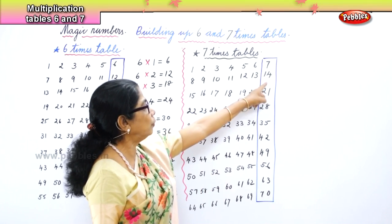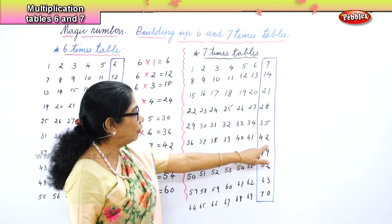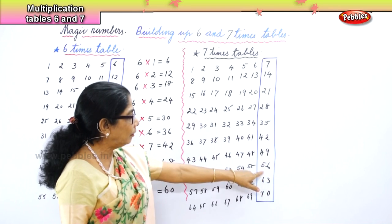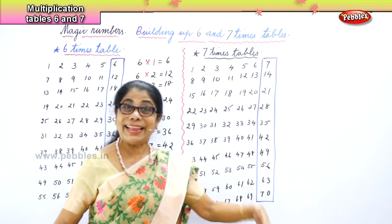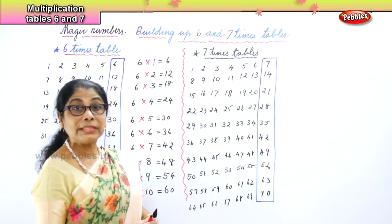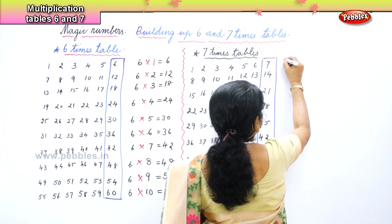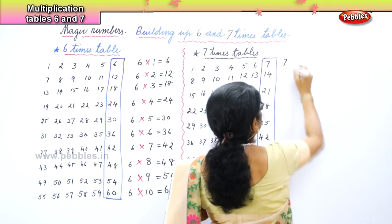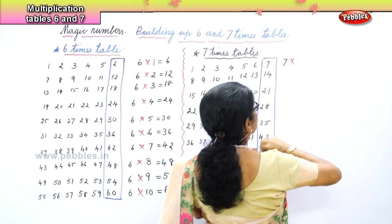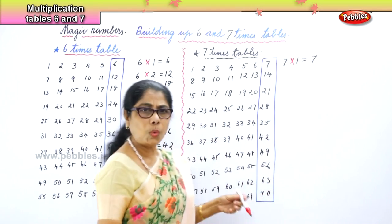Now you look carefully. We've got the 7 times table. 7, 14, 21, 28, 35, 42, 49, 56, 63, 70. Now let's write down. What do we say for this? 7 ones are 7. Then we go on.